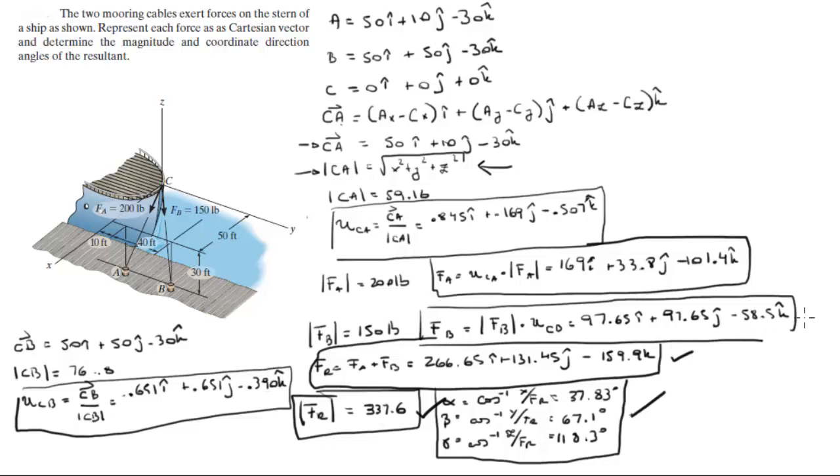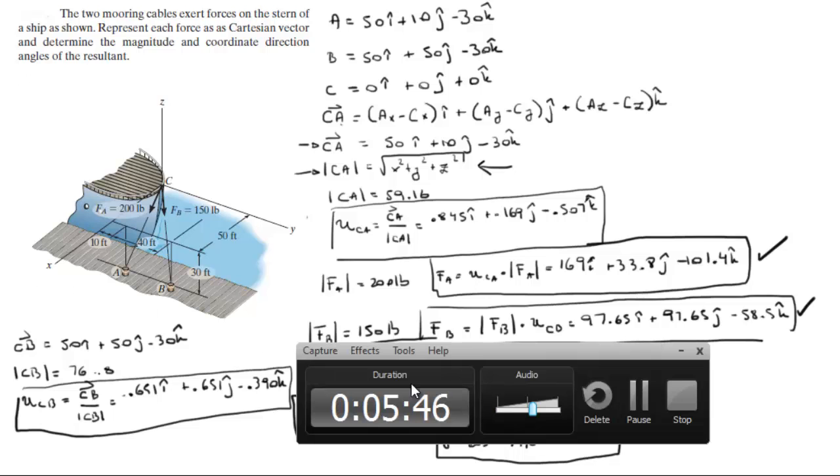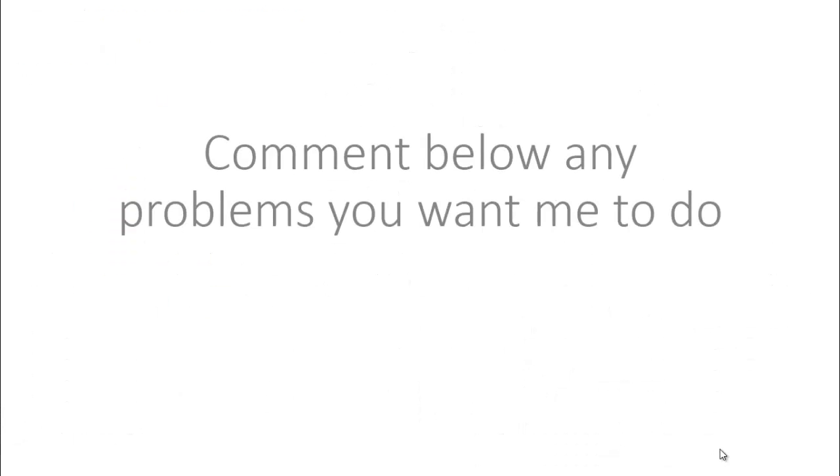Final answer: Cartesian vector form of the resultant force, Cartesian vector form of F of B, and Cartesian vector form of F of A. Please comment below if you want me to do any problems and I'll be happy to help. Thank you.